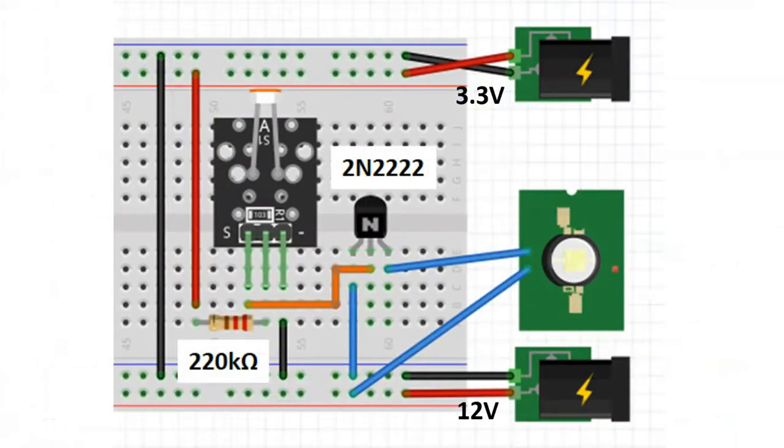Now this is the breadboard diagram associated with the circuit we just reviewed. So we see we have the 3.3 volt power supply, the 12 volt power supply, we have the flash LED, we have the 2N2222 transistor, we have the 220 kilo ohm resistor along with of course the LDR. So let's review each loop.